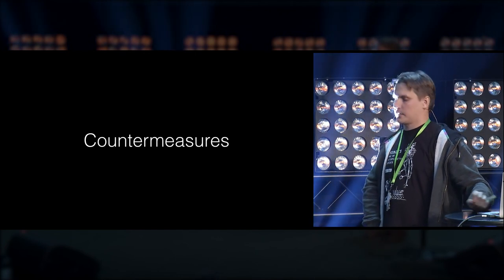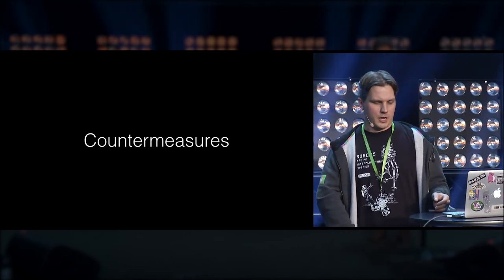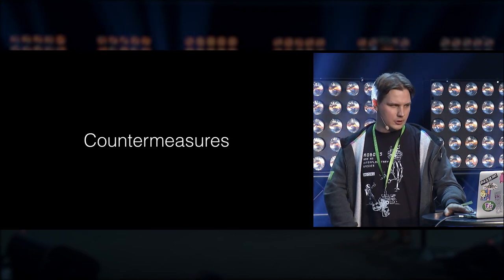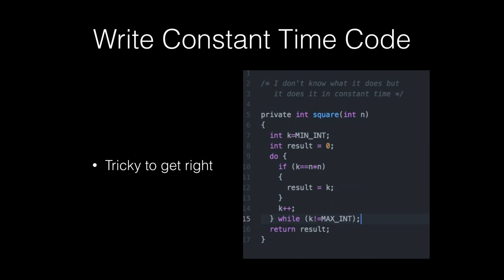Now a short overview on countermeasures. One approach is writing constant-time code. For example, a squaring function that, instead of returning when it gets the result, goes through the whole while loop from integer minimum to maximum and then returns the result. But this is sometimes tricky to get right — in this case there could be problems with undefined behavior using signed integers, and the processor and compiler can each do their own thing and interfere.